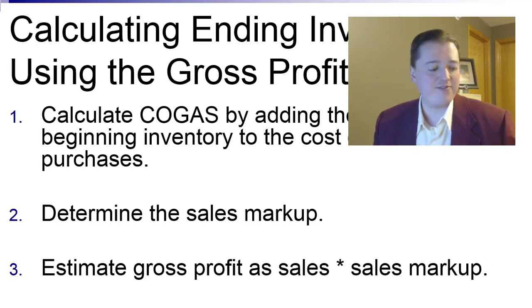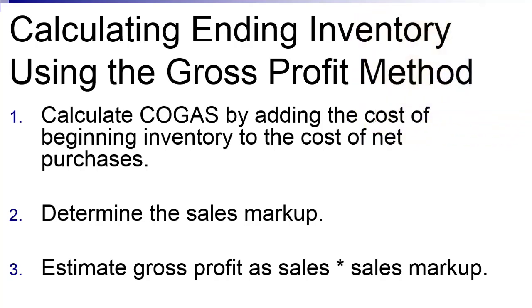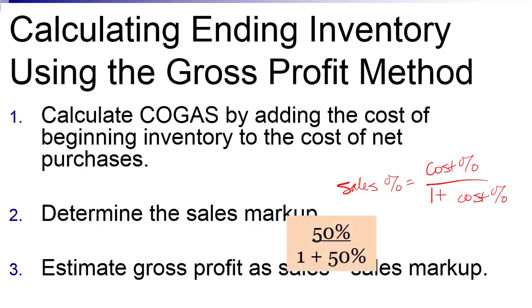To convert, we use a simple equation: the sales markup equals the cost markup divided by 1 plus the cost markup. So if the cost markup is 50%, I take 50% divided by 1 plus 50% — that gives me my sales markup and I can go on.